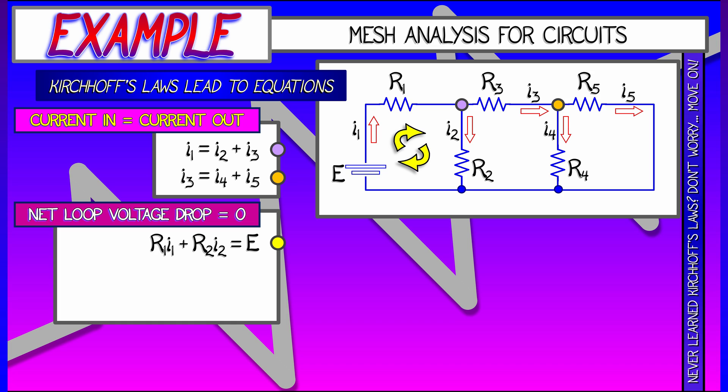The statement of Kirchhoff's Law is that the voltage drop given across the resistors, that is I1 times R1 plus I2 times R2 has to equal that voltage E.